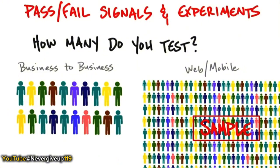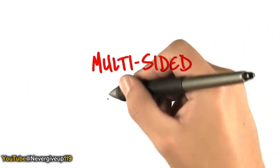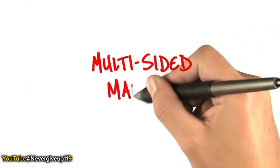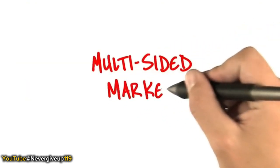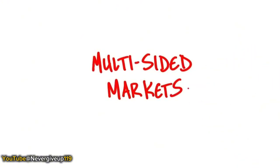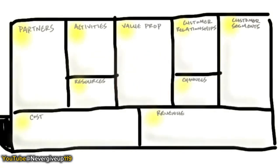Keep that in mind when trying to reach hundreds or thousands of people for customer discovery. Now, one other thing about the business model canvas: now that we've talked about customer segments, it's important to understand that sometimes you have multiple customers and multiple segments. It's interesting to take a look at Google as an example.